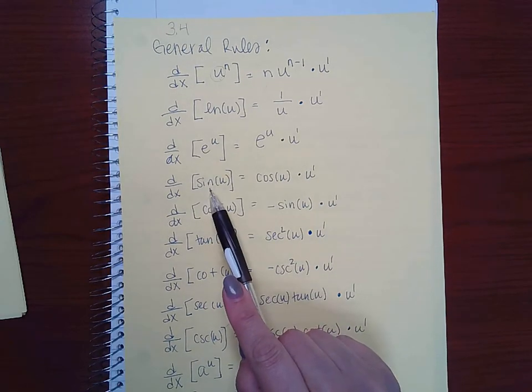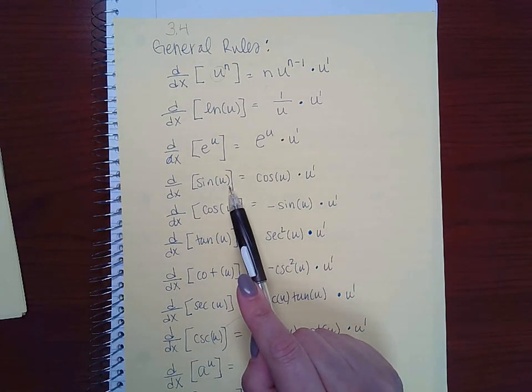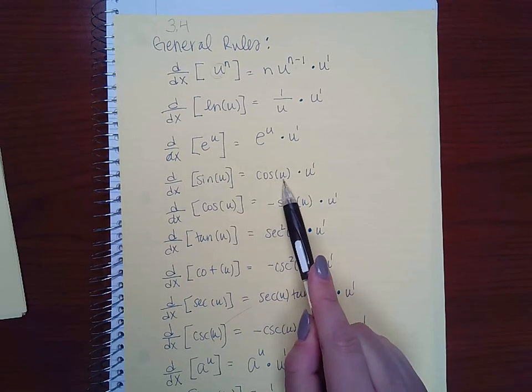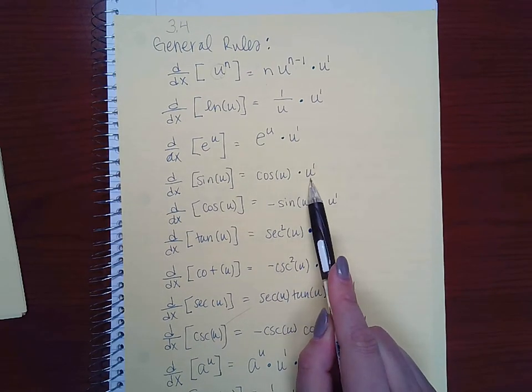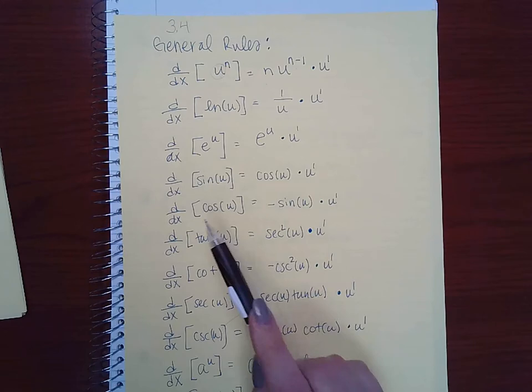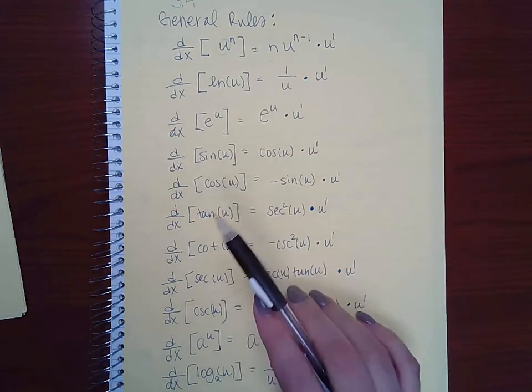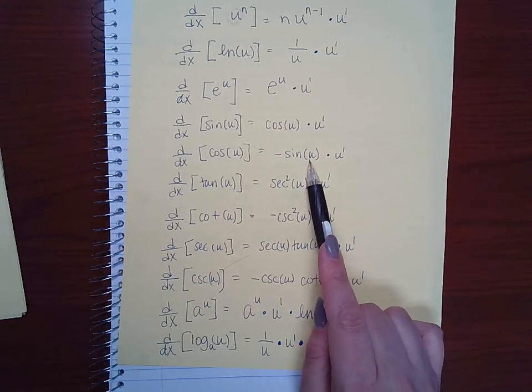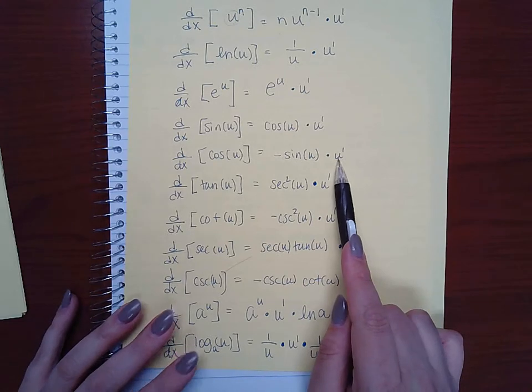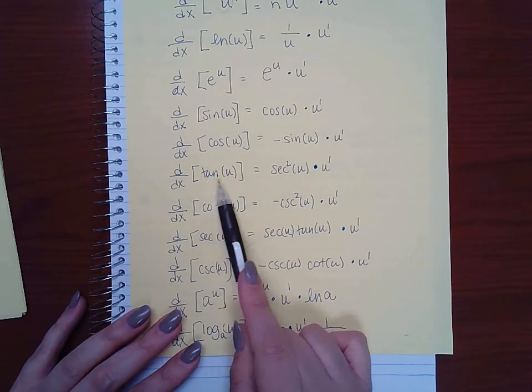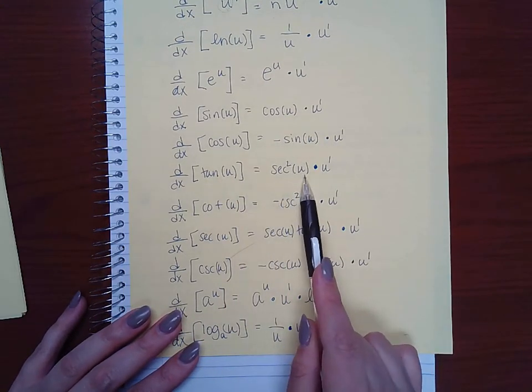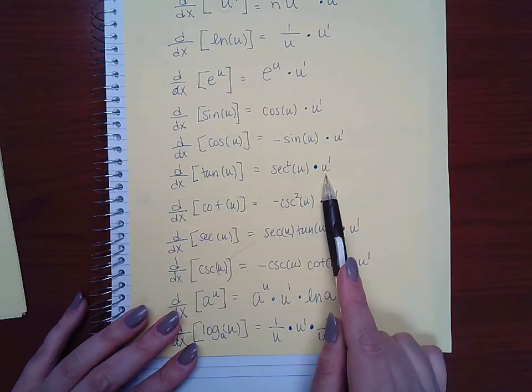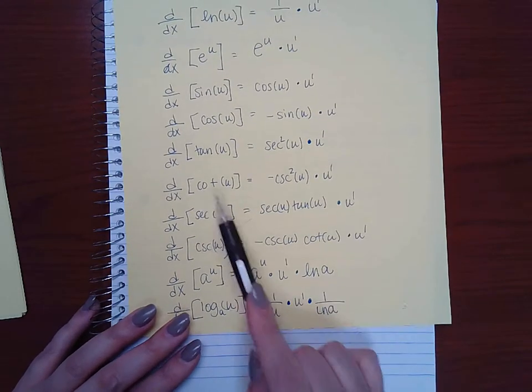If you take the derivative of sine of an angle, it would be the cosine of that angle times the derivative of that angle. The derivative of cosine would be negative sine of that original angle times the derivative of that angle. The tangent would be secant squared of the original angle times the derivative of that angle, and so on and so forth.